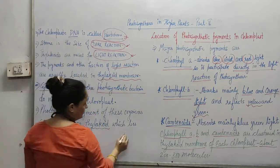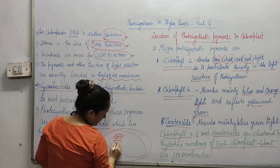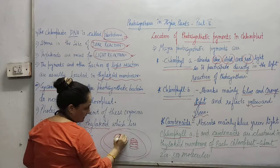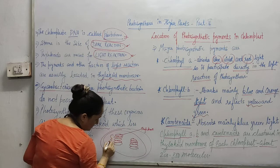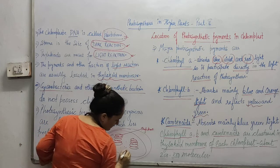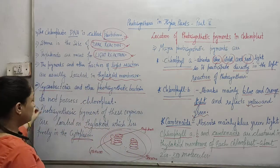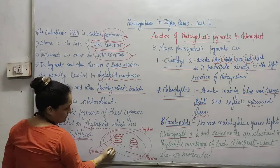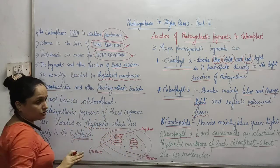Stroma is the site of the dark reaction. Yesterday we talked about the structure — a double-membranous structure — and inside that there is a pile or heap of coin-like structures known as thylakoids. When we talk about the entire heap it is known as the Granum, and the fluid part is the stroma. So the dark reaction is going to be performed in the stroma — this liquid matrix is where the dark reaction happens.